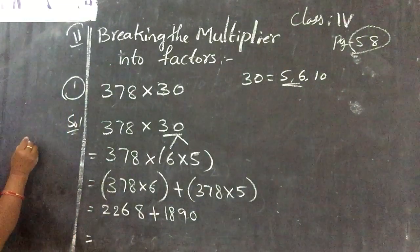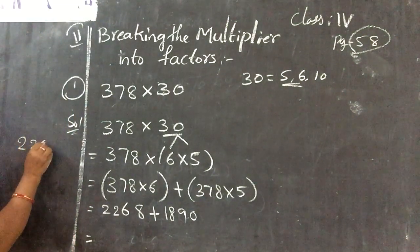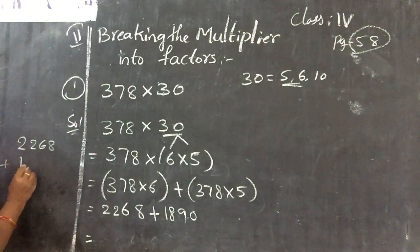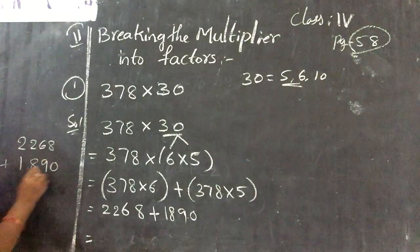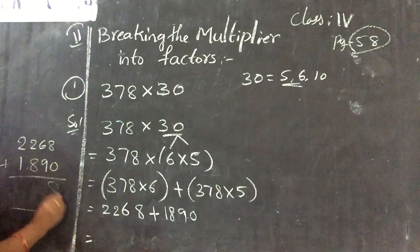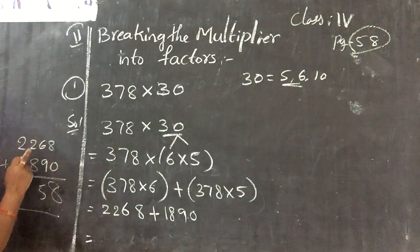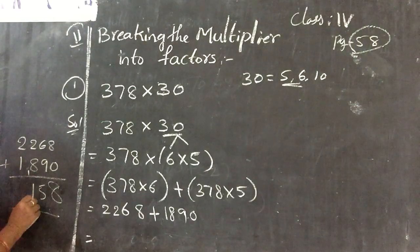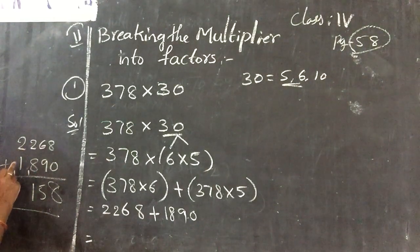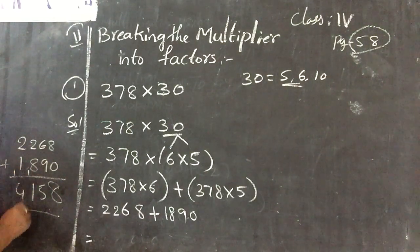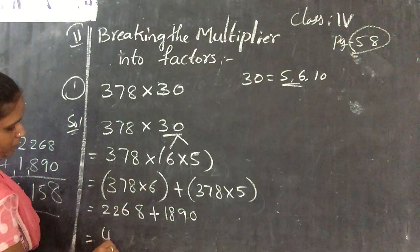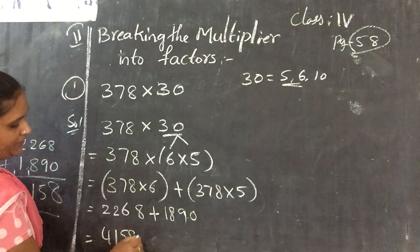Now do the addition of 2268 plus 1890. If you do the addition you will be getting 8 plus 0 is 8, 6 plus 9 is equal to 15, 1 is the remainder. 8 plus 2 is equal to 10 plus 1 is 11, 1 is the remainder. 2 plus 1 is 3, 3 plus 1 is equal to 4. So answer is 4158.